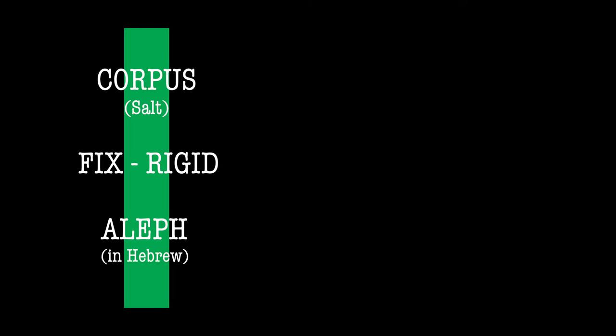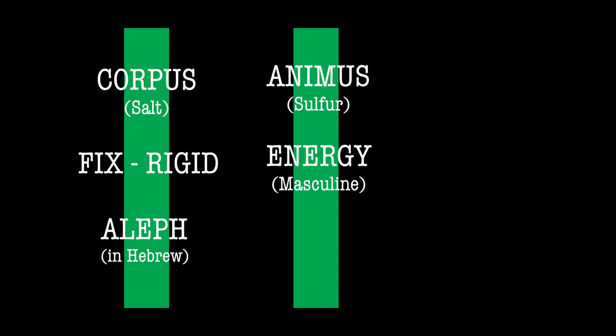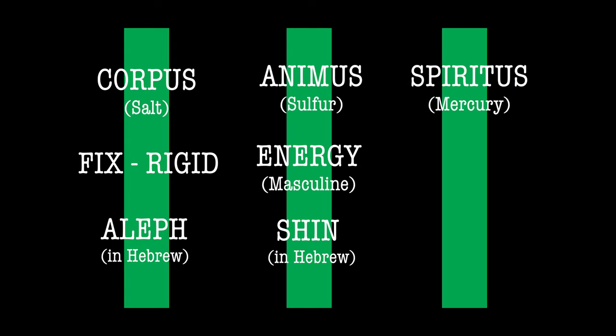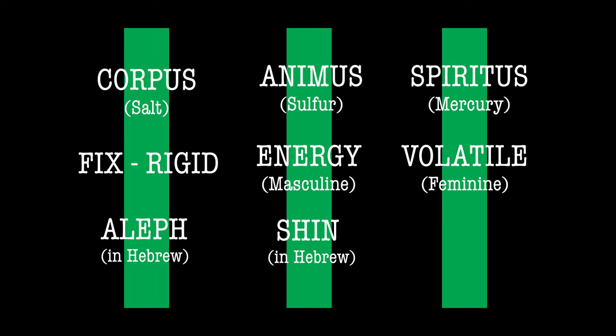Connected to the Hebrew letters, corpus is also connected to the letter Aleph. Then we have animus, represented by sulfur. Sulfur is that masculine energy — the energy that animates us. Animus. It's that energy that gives us ambition, power, strength, and will. It's the masculine divine energy, the agitating force that pushes you to accomplish and do things in life. In the Hebrew alphabet, it is represented by the letter Shin. And the third element, spiritus — spirit or soul — represented by mercury. This is the divine feminine energy, the soul. This energy is volatile, it's subtle. We have salt which is fixed; mercury is volatile — fixing the volatile and volatilizing the fixed. Finding that balance is a very important principle of alchemy.